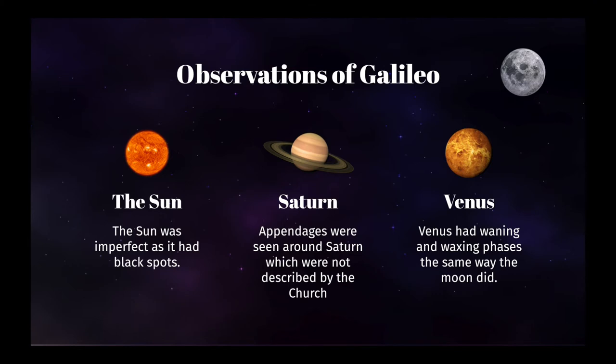He found even more imperfections in the sky, such as black spots on the sun, appendages on Saturn, as well as the phases of Venus, which resembled the waxing and waning of our own moon. Though Galileo had not entirely dismissed Copernicus' heliocentric model, he had not completely believed it either.